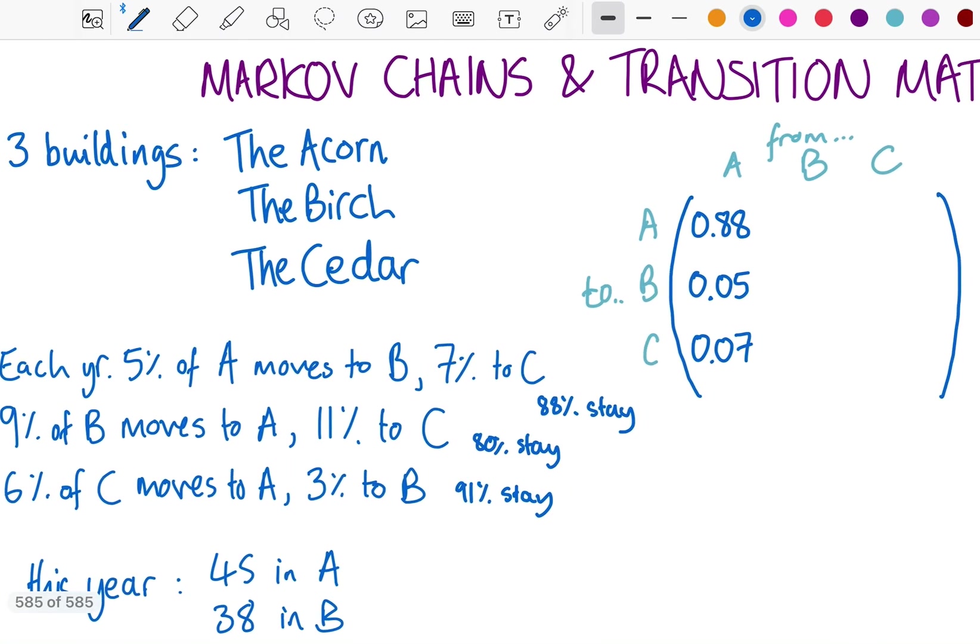But if instead we put it into a matrix, then we can see that we are able to do lots of things with it. So how this is going to work is that at the top here we have from A, B, and C in the current year, and then next year you'll be in A, B, and C with these probabilities here. So we read this 0.05 as there's a 5% chance that if you were in A, you'll be in B next year, as all of these bits of information told us at the start anyway.